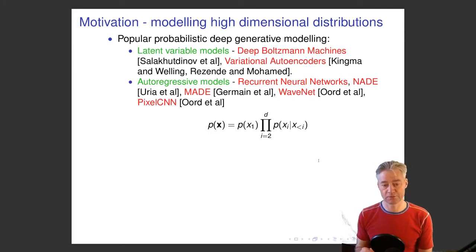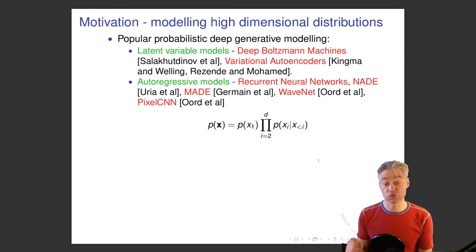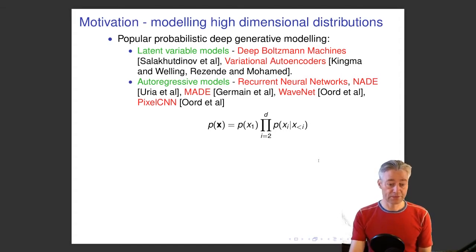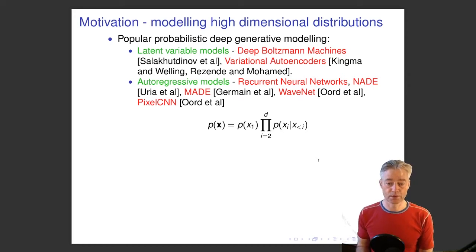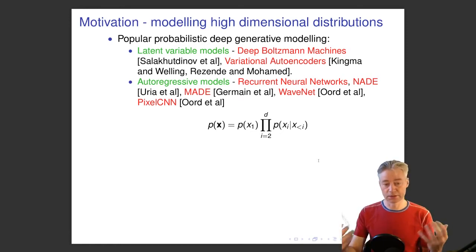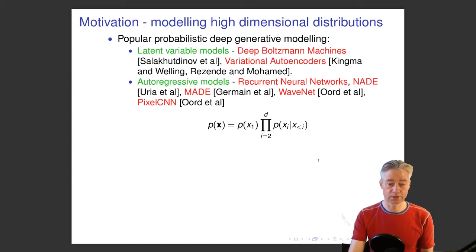For example, the first term is p(x2 | x1), then p(x3 | x1, x2), and so on. There are many papers using this approach. The disadvantage is that when you want to draw a sample, you have to do it sequentially: first generate x1, then x2 given x1, and so on. By contrast, with variational autoencoders we usually generate everything in parallel, though autoregressive models are better at capturing dependencies.